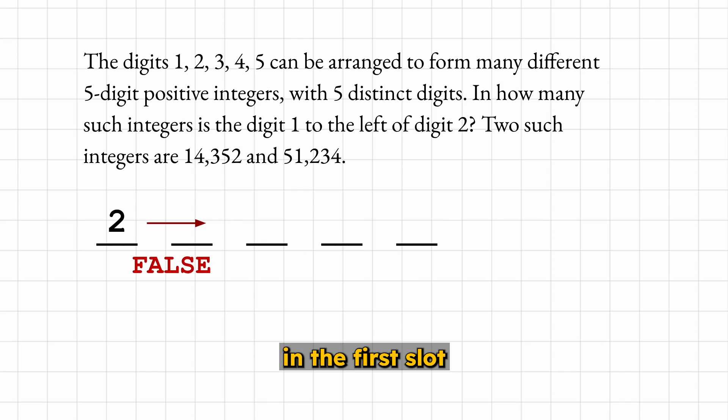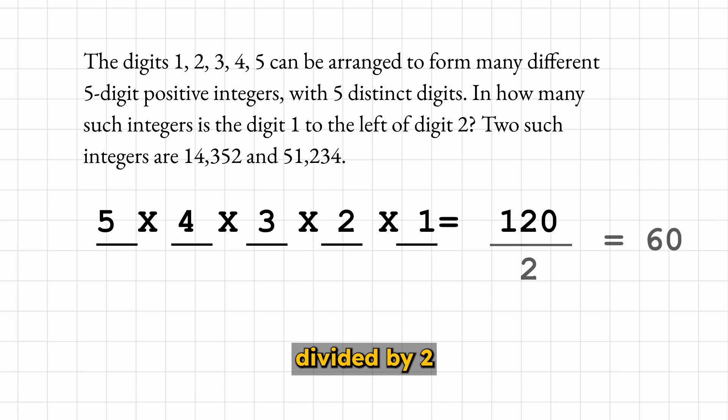If the 2 is in the first slot, none meet the condition. But if 2 is in the last slot, all meet the condition. So on average, half of the permutations meet the condition. And the same thing when comparing slots 2 and 4. So there are 120 divided by 2, or 60 as your answer.